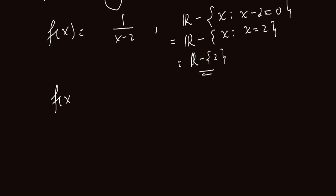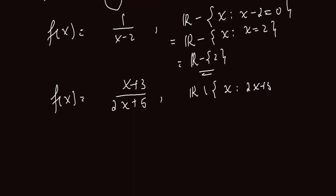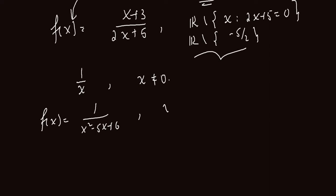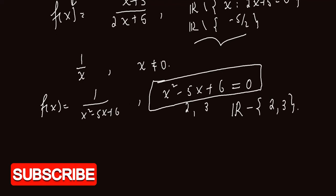If you take a rational function, then the domain of that function will be all real numbers without those x's which make the denominator equal to 0. We are going to find all values which are allowed for x. For the general function 1 over x squared minus 5x plus 6, the domain is all real numbers except those that make the denominator 0. You can solve this equation using the quadratic formula, factorization method, or completing the square method.